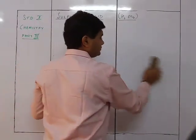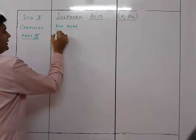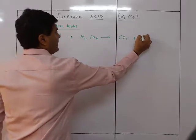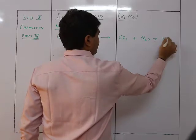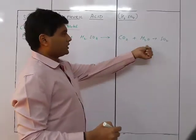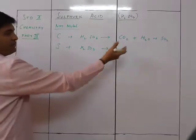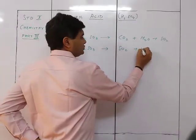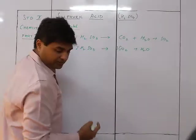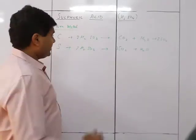With non-metals: carbon + H₂SO₄ → CO₂ + H₂O + SO₂. Sulfur + H₂SO₄ → SO₂ + H₂O (balanced as 3H₂SO₄ giving 3SO₂ + 2H₂O). These reactions use concentrated sulfuric acid in each case.